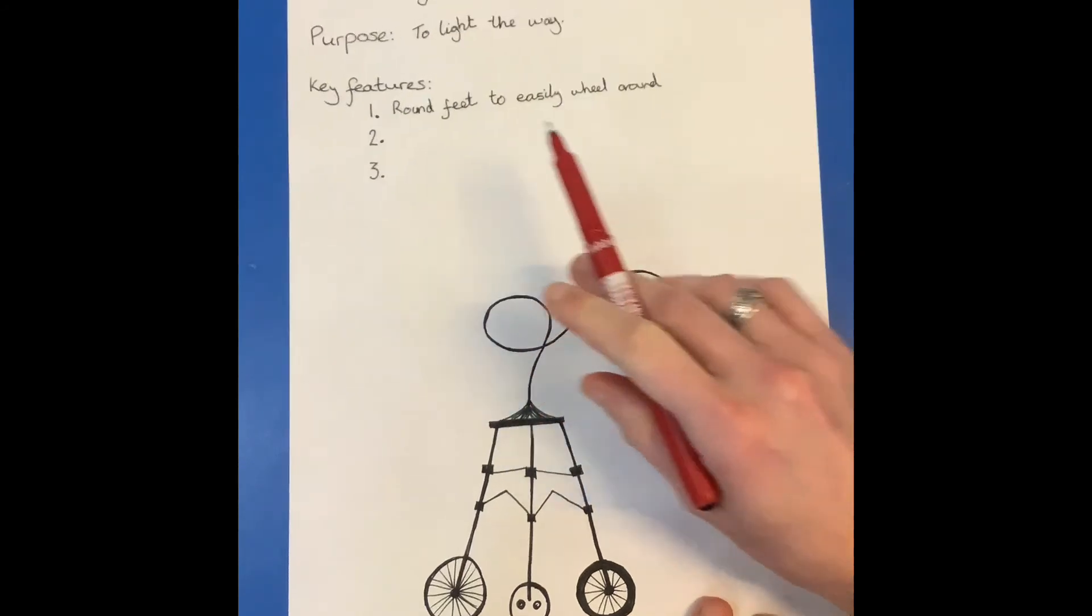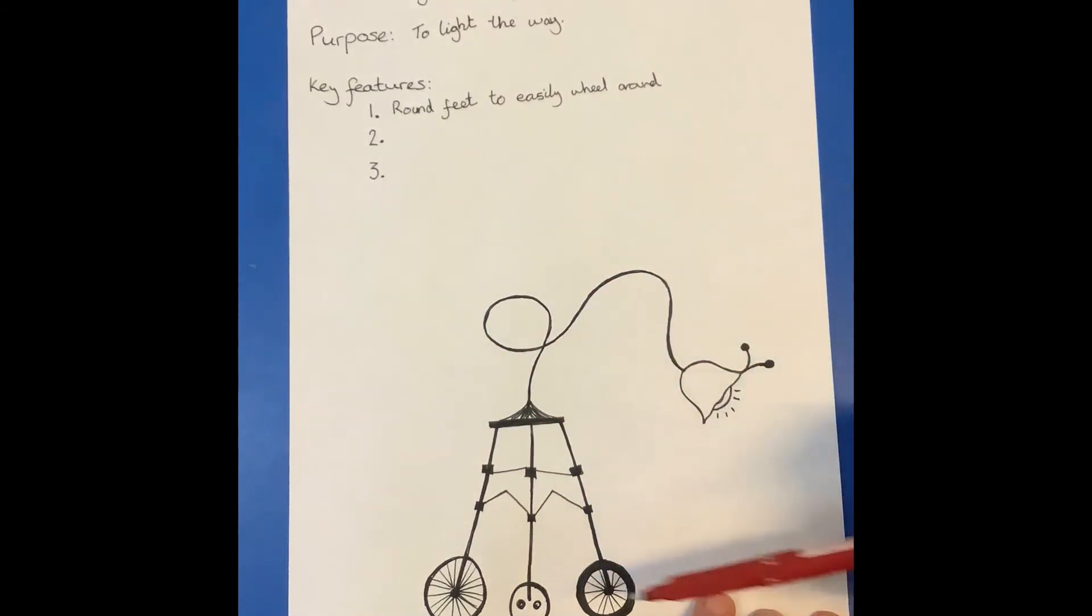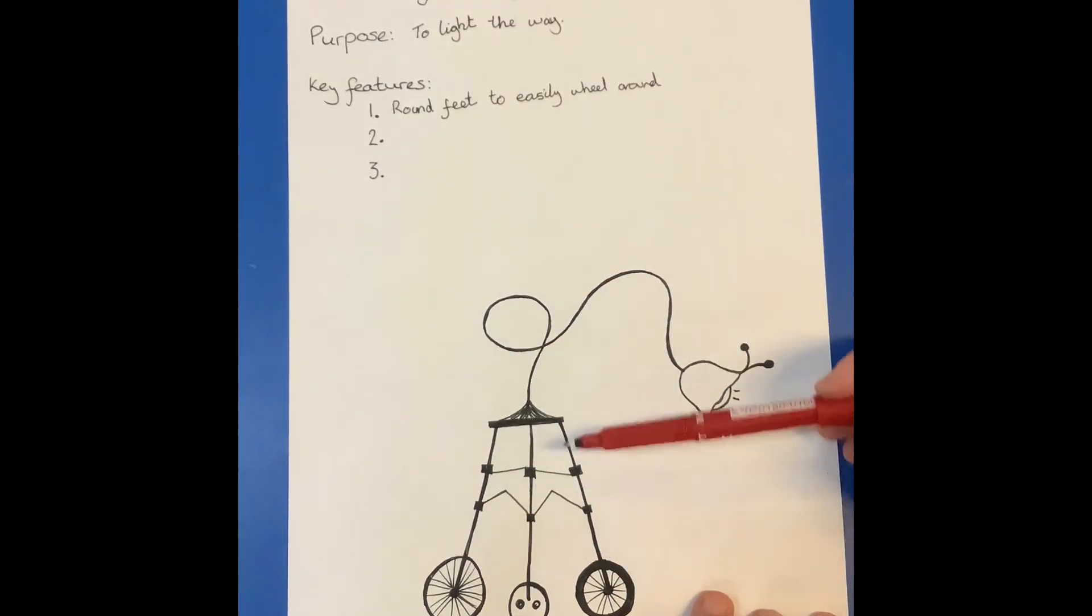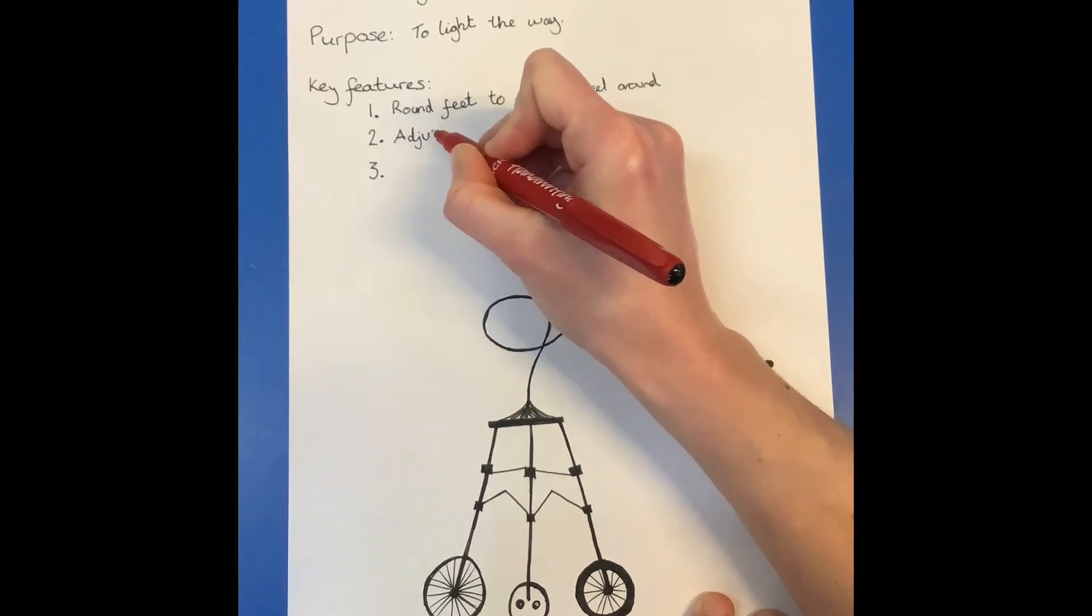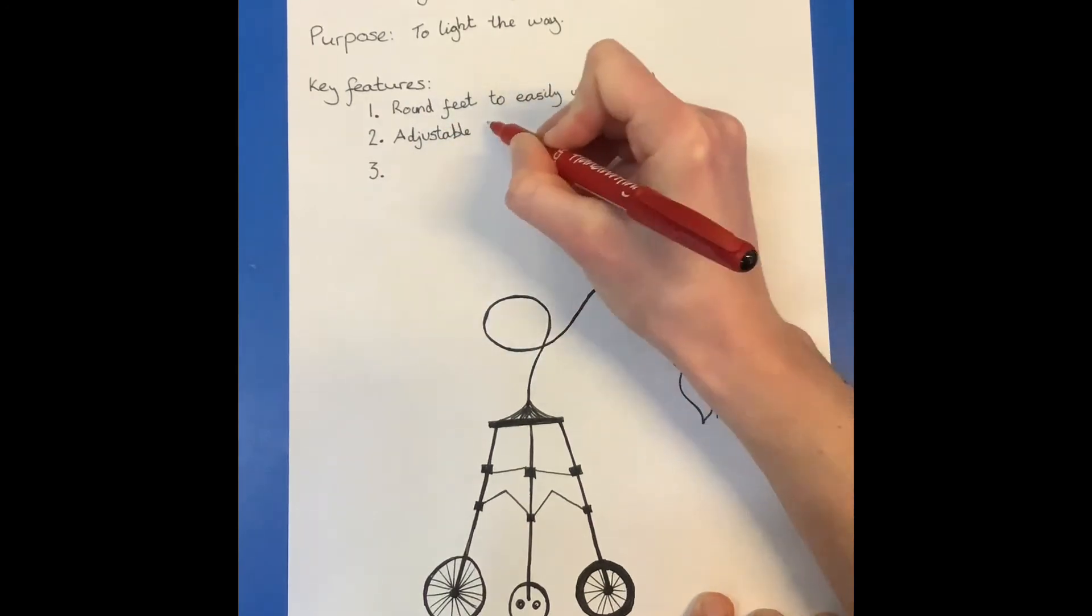And then what else is a key feature? I've got adjustable legs for different heights. That must be, I think that's quite important for mine. So I'm going to write adjustable legs.